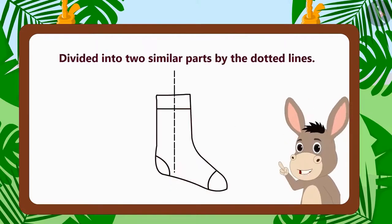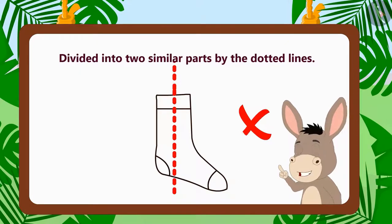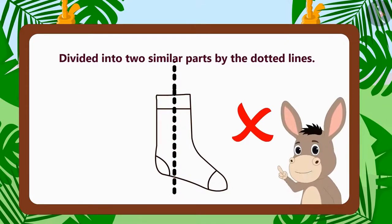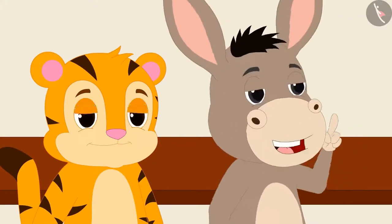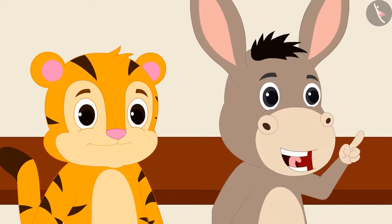However, there are some objects and letters that are not made of two similar parts. Therefore, they cannot be divided into two similar parts by using a dotted line.